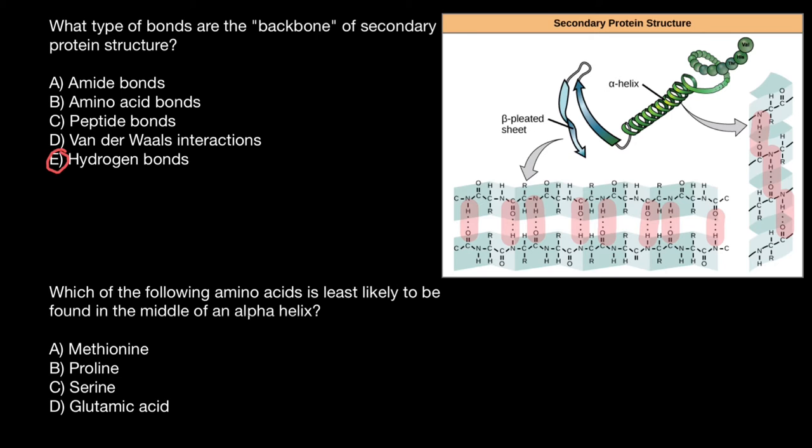And next question, which of the following amino acids is least likely to be found in the middle of an alpha helix? Our choices are methionine, proline, serine, and glutamic acid.